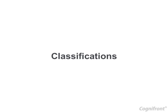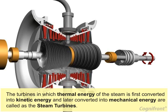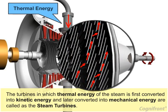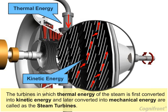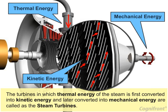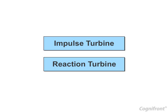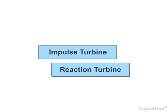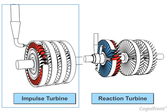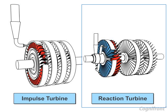Let us see the classification of steam turbines. Turbines in which thermal energy of the steam is first converted into kinetic energy and then later converted into mechanical energy are called steam turbines. According to steam action, steam turbines are mainly classified into two types: impulse turbine and reaction turbine.